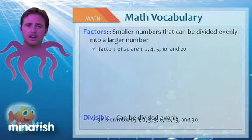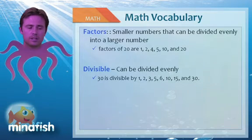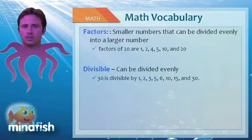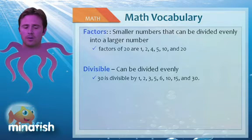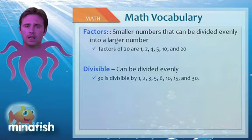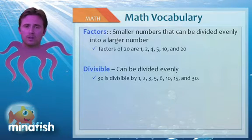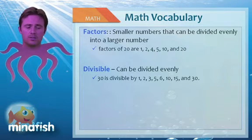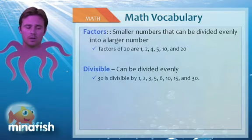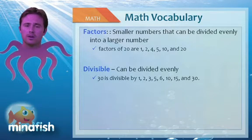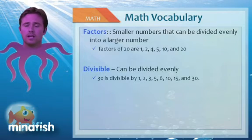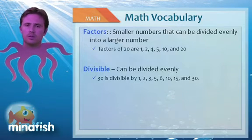Factors and divisible go hand in hand. Factors are numbers that divide evenly into a larger number. The factors of 20 would be 1, 2, 4, 5, 10, and 20. Divisible is just flipping it around - 20 is divisible by 1, 2, 4, 5, 10, and 20. Or 30 is divisible by 1, 2, 3, 5, 6, 10, 15, and 30. Factors and divisible are very similar.